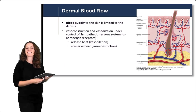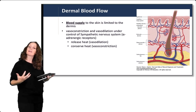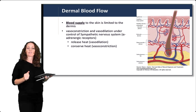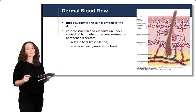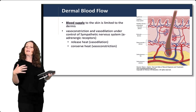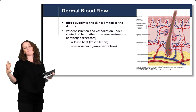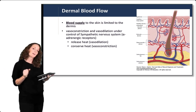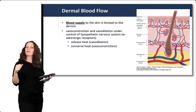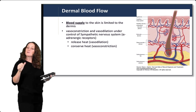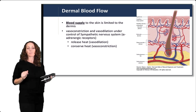Blood supply to the skin is limited to the dermis. Vasoconstriction and vasodilation are controlled by the sympathetic nervous system via alpha-adrenergic receptors in the skin. To release heat, blood vessels in the skin vasodilate; to conserve heat, they vasoconstrict. For example, activation of the sympathetic nervous system causes vasoconstriction, which can lead to cold, clammy hands as blood flow is diverted to other areas of the body.